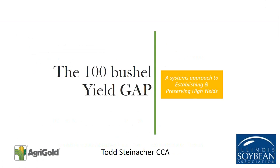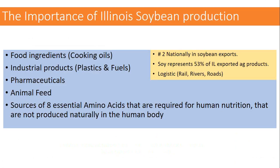We call this the 100-bushel yield gap because some high-yield contest winners can obtain 170-plus-bushel soybeans, while many producers in Illinois are around 70 to 90 bushels. There's still a fairly large gap to close. The importance of Illinois soybean production is why we need to improve yields regardless of acre size and commodity prices.